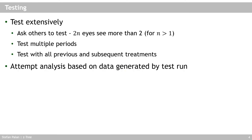Once your code is done — and sometimes even while you're still programming certain parts — test, test, test. Do this extensively and don't do it alone; ask others to help you test, because more eyes see more. Start by testing a single period; once that works perfectly, test multiple periods. Don't take the functioning of multiple periods for granted if you've only tested one, and also test with all preceding and subsequent treatments and the questionnaire.